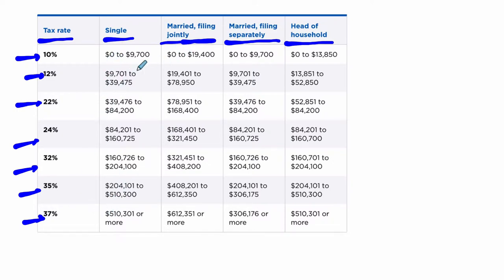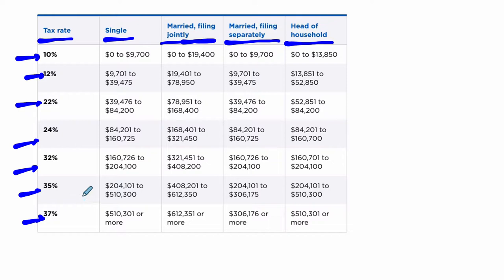To understand what's going on here, we should first realize that we have a progressive tax rate system. These different tax brackets mean that we tax different parts of your income at different amounts. Different parts of your income are taxed at different rates, and the more you make, the higher the tax rate goes.